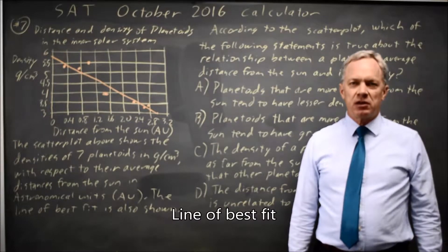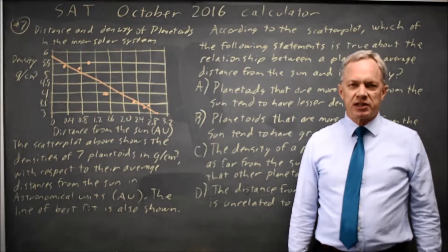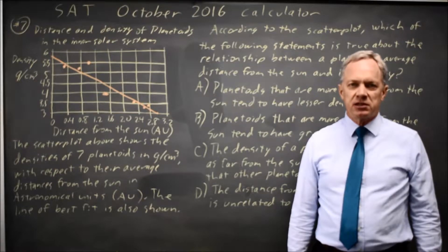This is calculator question number seven from practice test seven in the 2018 College Board Prep Book. It's also the October 2016 SAT.